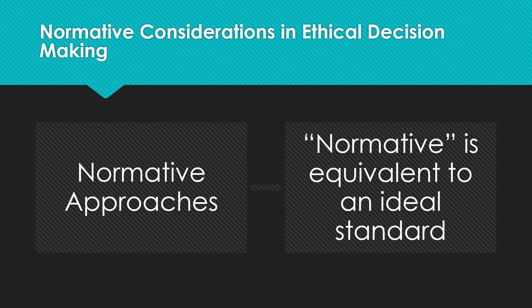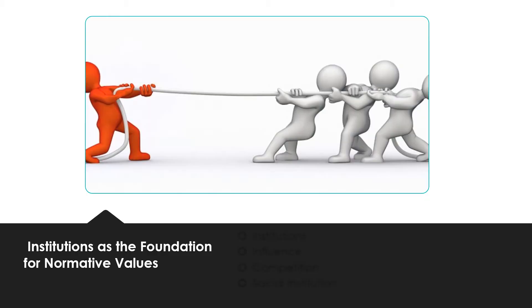Normative considerations and ethical decision-making. Normative is equivalent to an ideal standard. A normative approach to business ethics examines what ought to occur in business ethical decision-making. When we discuss normative approaches, we are talking about how organizational decision-makers should approach the issue. Government, religion, and education are institutions that influence the creation of values, norms, and conventions that both organizations and individuals should adhere to. Political influences can also take place within the organization.